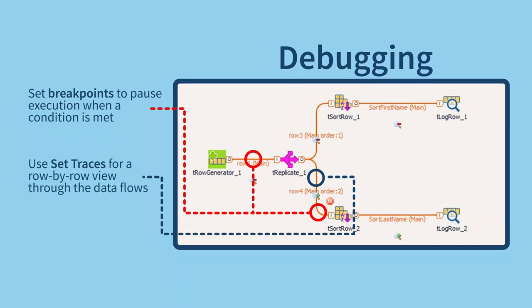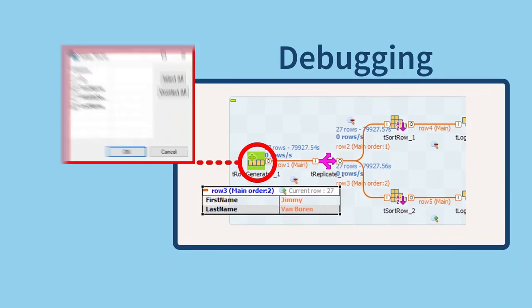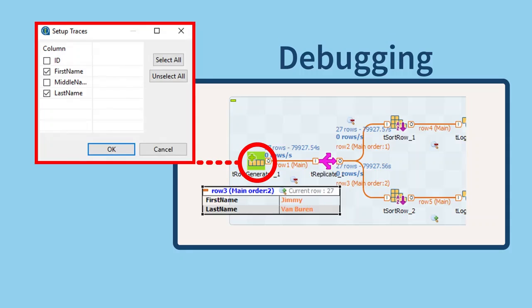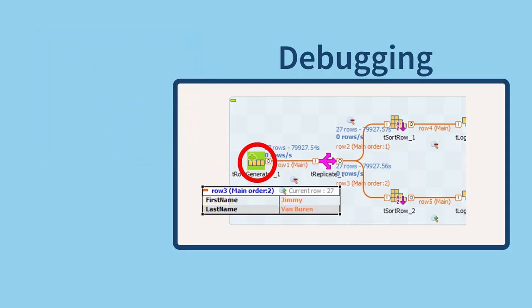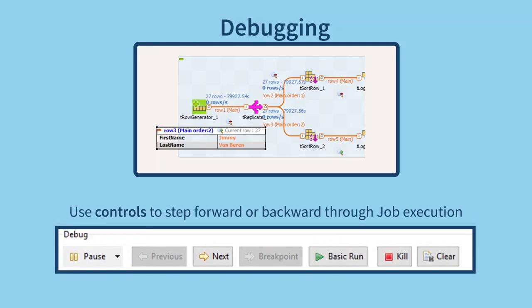With traces debug mode, you can see a row-by-row view of data through the flows. You can configure what gets displayed when you set a trace. You can enable or disable it for each flow and specify which columns to display. You can also control execution using the controls to step forward or back.